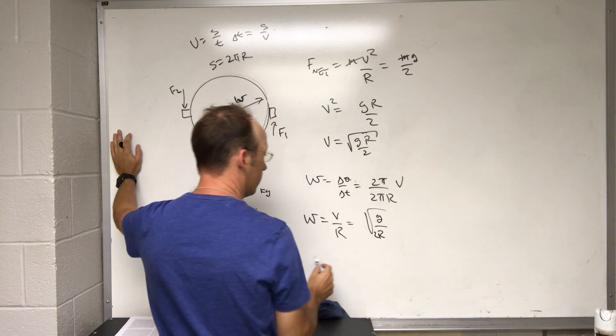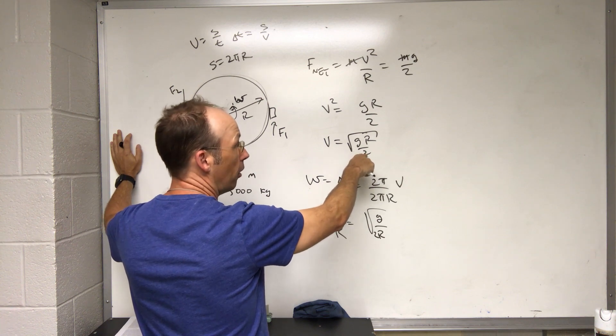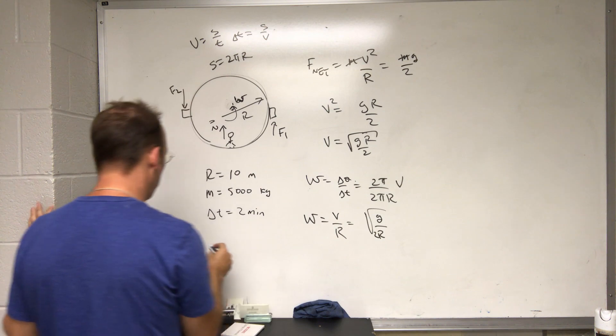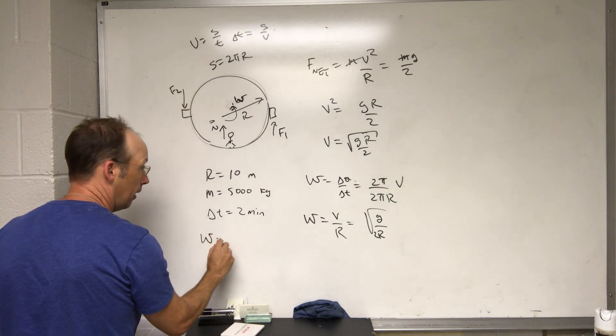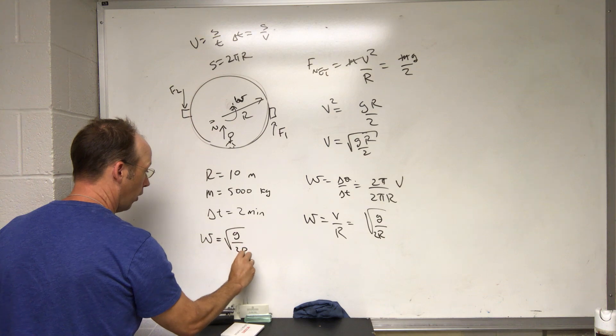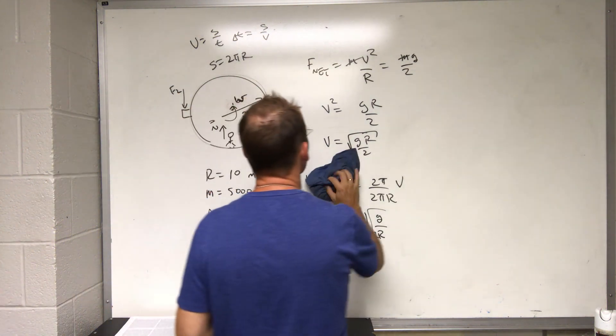So if I bring the r in, that's going to be the square root of g over 2 r, because if I have a 1 over r, bring it in, it's gonna be r squared. So I'm going to write that up here. Omega equals the square root of g over 2 r. That's how fast I want it to go.